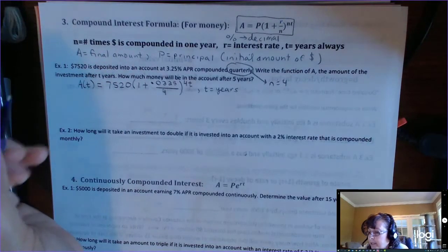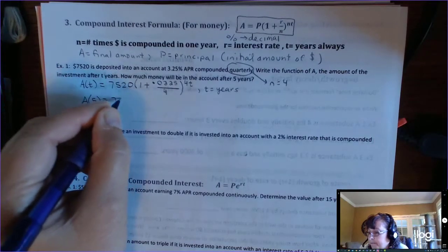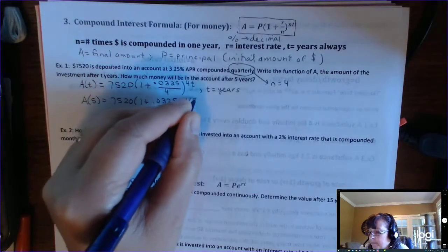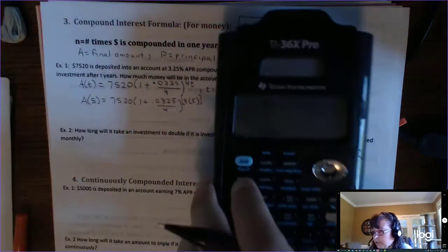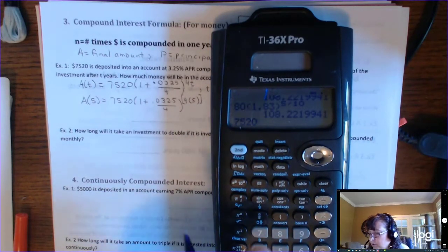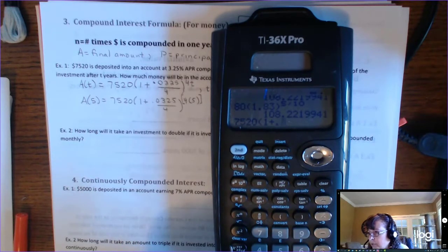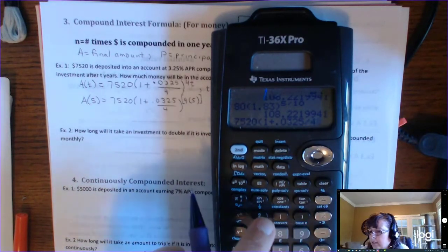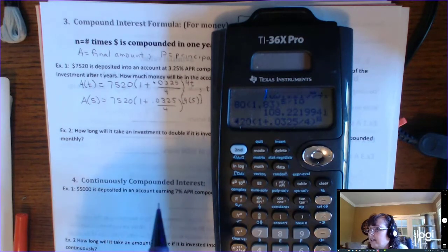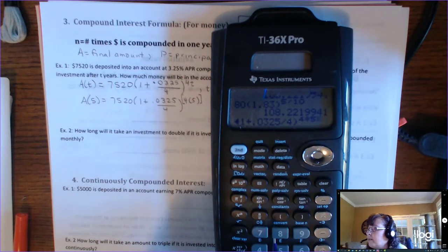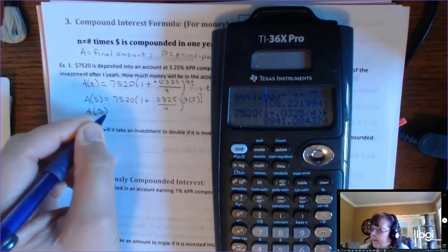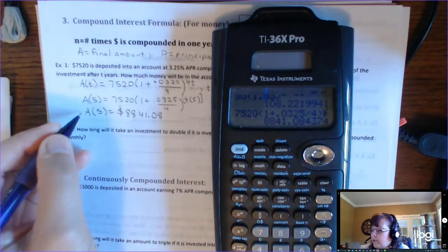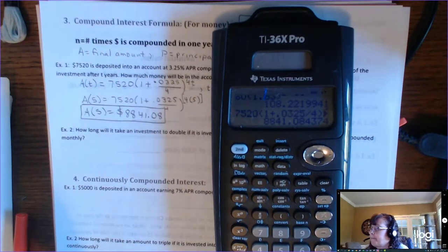And then it says how much money will be in the account after five years. So that's simply, we're going to put five in for T. And this is an exponent here. So with this calculator, we shouldn't have a problem with that. But some other older calculators, you might run into a problem when you try to raise that to the 20th power if you don't use parentheses. But with this calculator, you have this button that's going to raise that, and you put both the four and the five in the parentheses there. So after five years, you will have, unit is money, $8,841.08. And of course, you would round to the hundredths because money rounds to the hundredths.